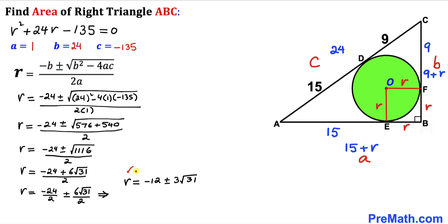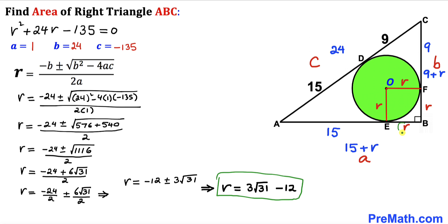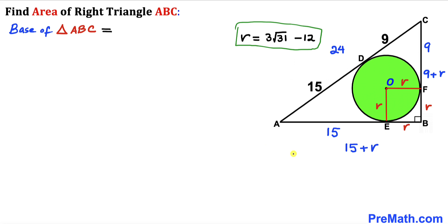Since the radius r must be positive, we take the positive root: r = 3√31 - 12. Now let's calculate the base of triangle ABC. Base = 15 + r = 15 + (3√31 - 12).